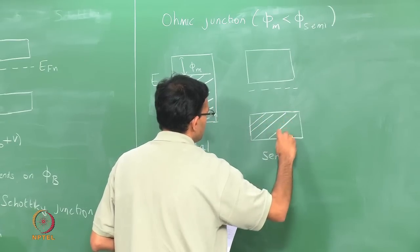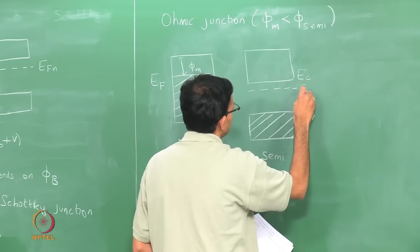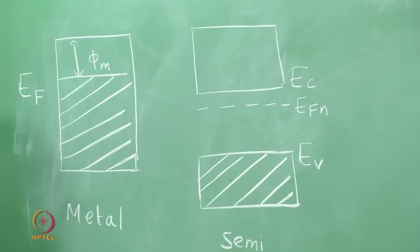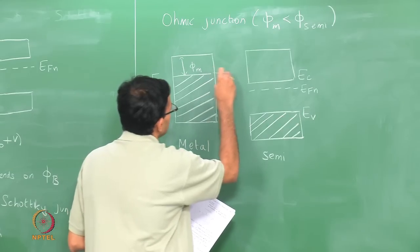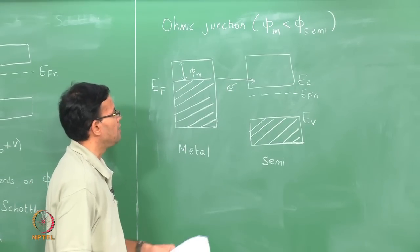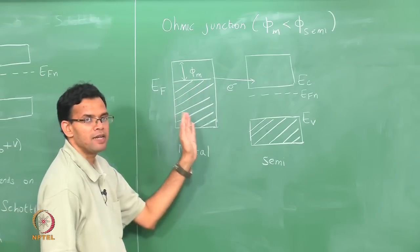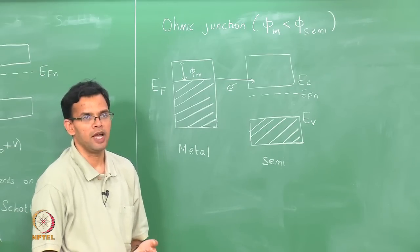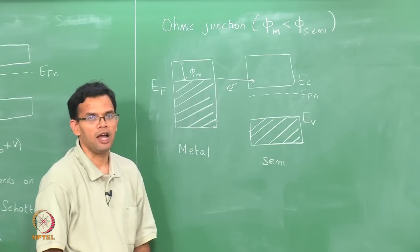In the ohmic junction case — where phi_m is less than phi_semi — the valence band top is E_V, conduction band bottom is E_C, and it is n-type with E_FN close to the conduction band edge. Here, there are a large number of electrons on the metal side that can move to the semiconductor. An electric field is set up in the direction opposite to the Schottky junction. Because electrons move from the metal into the semiconductor, you have an accumulation region rather than a depletion region.